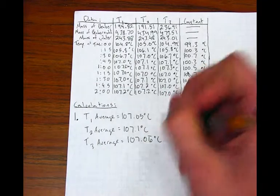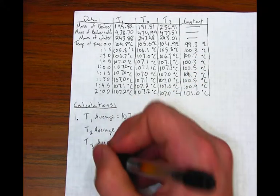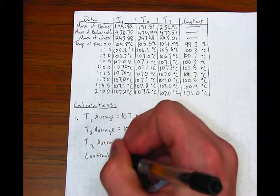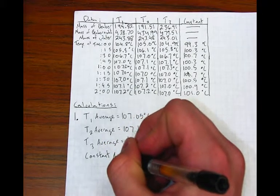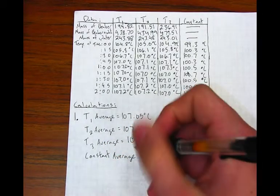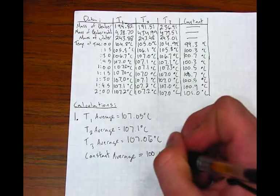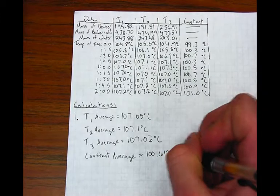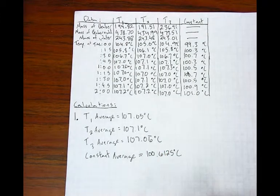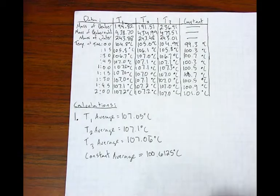The T1 average is 107.05 degrees Celsius. The T2 average is 107.1 degrees Celsius. The T3 average is 107.06 repeating degrees Celsius. So that makes our constant average 100.6125 degrees Celsius.